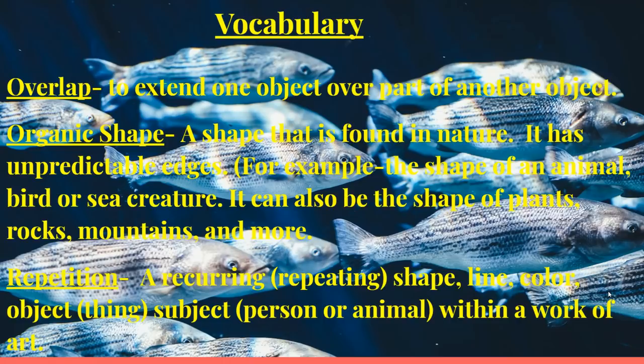Our next vocabulary word is organic shape. This is a shape that is found in nature. It is very different than a geometric shape. An organic shape has unpredictable edges. For example, it can be the shape of an animal, a bird, or a sea creature. It can even be the shape of plants, rocks, mountains, and more.